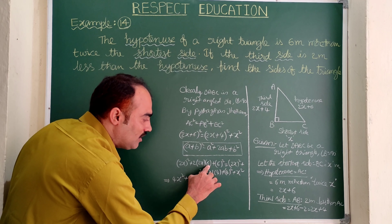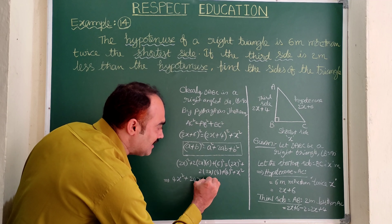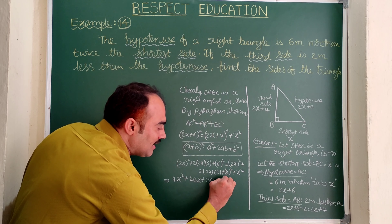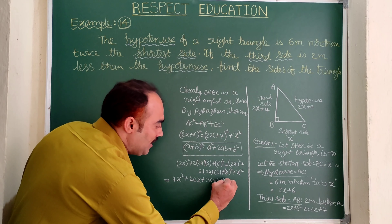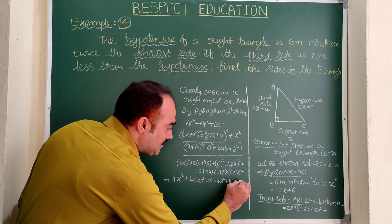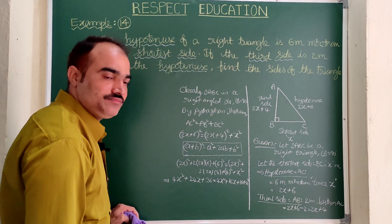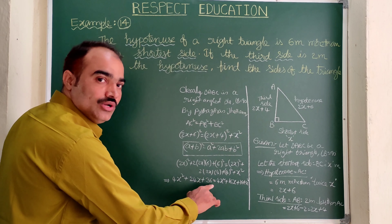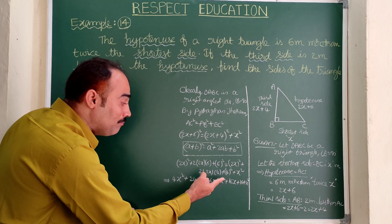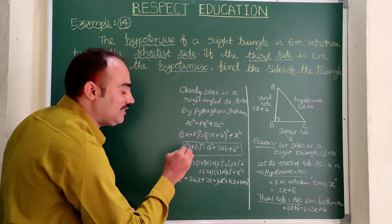So on simplification: 4x² plus 24x plus 36 equals 4x² plus 16x plus 16 plus x². Since 4x² appears on both sides, they cancel out. Bringing all terms to one side gives us: 0 equals x² plus 16x plus 16 minus 24x minus 36.